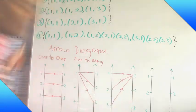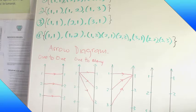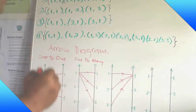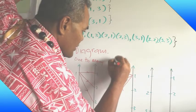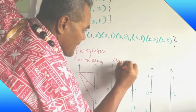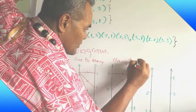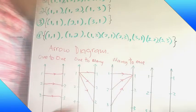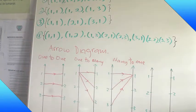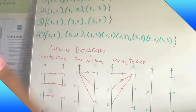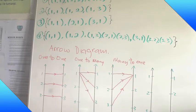So what you can see that the third one or the third arrow diagram represents the relation named as many to one. Many to one, that is the special name for number three diagram, arrow diagram.